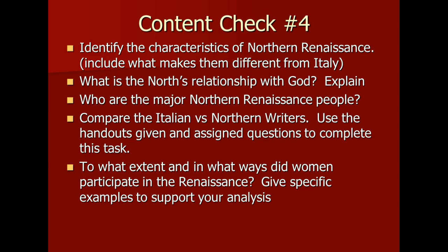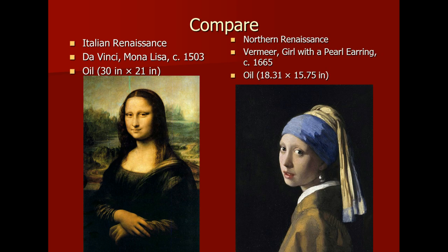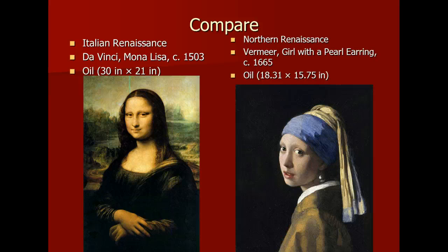Here's your content check number four. Please stay tuned — I'm going to talk a little bit more about some of the artwork from the north. Italian Renaissance versus the Northern Renaissance: both of these pictures are done in oil. Look at Da Vinci's Mona Lisa in 1503 versus Vermeer's 1665 — you're talking about over 150 years of change here and the techniques. We've got Sfumato on the left with Da Vinci, and chiaroscuro on the right with Vermeer's Girl with the Pearl Earring. The Girl with the Pearl Earring is considered the Mona Lisa of the North because of that mysteriousness and her popularity.